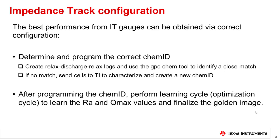Once the ID has been identified and programmed, a learning cycle must be performed to learn the resistance and Qmax values and finalize the golden image.